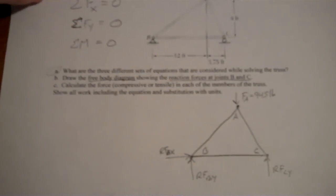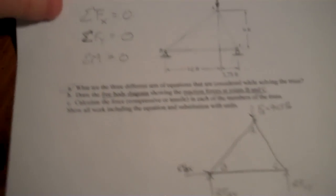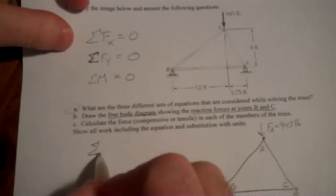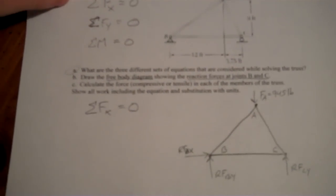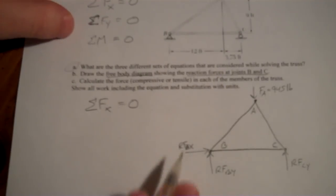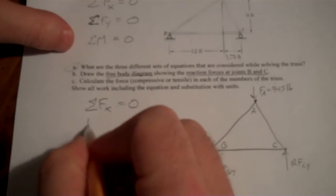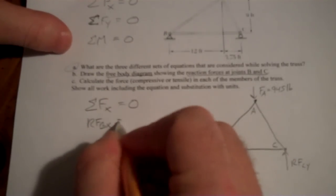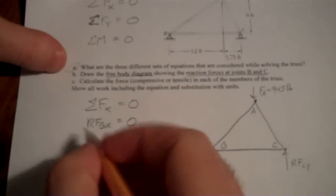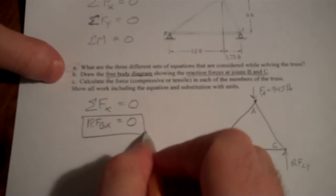Now we need to calculate what these forces actually are. So we start with sum of the forces in the X direction, equal to zero. Okay, for us, there is only one force in the X direction. So RF,B,X, is equal to zero. That was easy. One down, two to go.